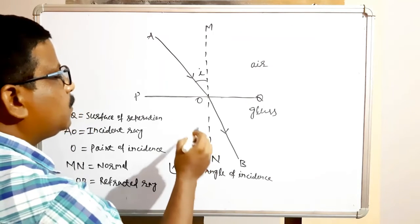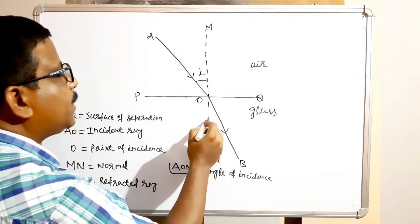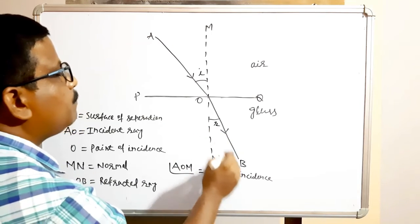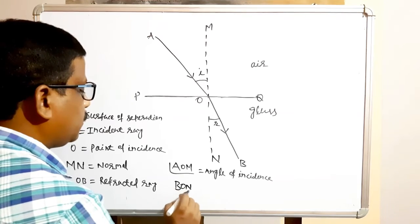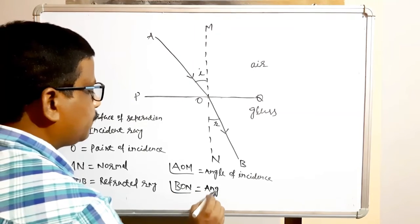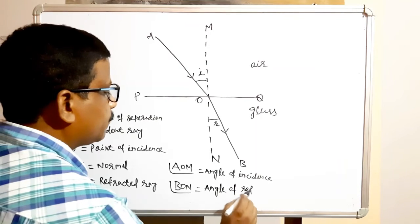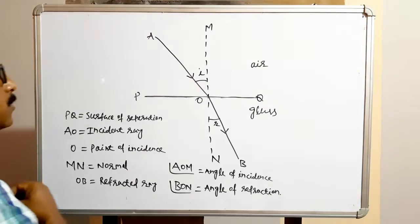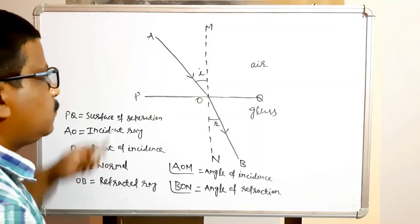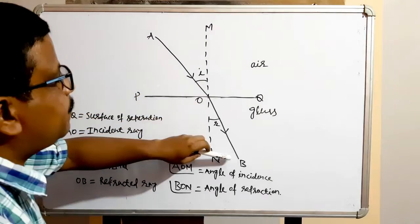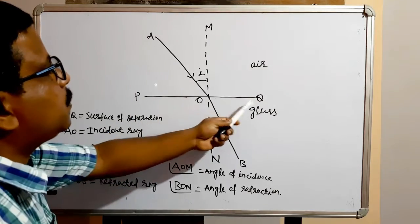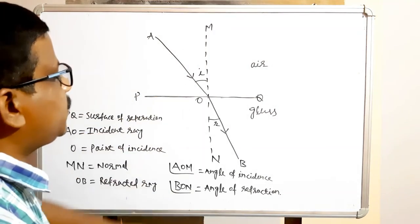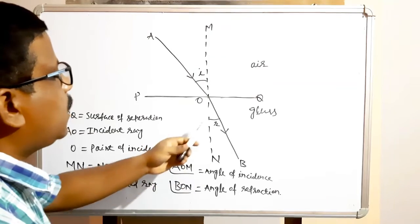The angle formed between the incident ray and the normal is called the angle of incidence, symbolically represented as i. Angle AOM is the angle of incidence. The angle formed between the refracted ray and the normal is called the angle of refraction, symbolically represented as r. Angle BON is the angle of refraction.